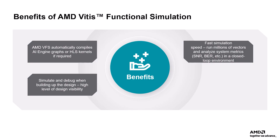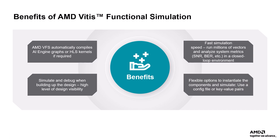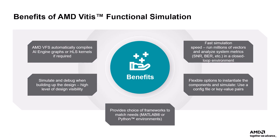It provides flexible options to instantiate the components for simulation. If you provide a configuration file or key value pairs, the system checks if a valid build exists. If not, it generates the necessary build files and compiles the component. Vitis functional simulation provides a platform for customers to verify design functionality comfortably in their own modeling frameworks, giving the choice of MATLAB or Python to match their needs.